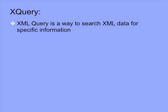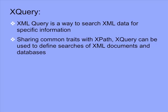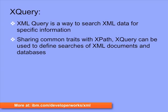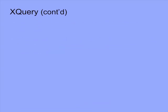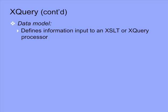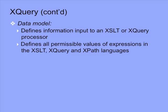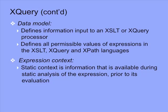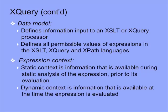XML query, or XQuery, is a powerful way to search XML data for specific information. Sharing common traits with XPath, such as traditional XPath expressions, XQuery can be used to define searches of XML documents and databases. XQuery is defined in terms of the data model and the expression context. The data model defines information input into an XSLT or XQuery processor, and also defines all permissible values of expressions in the XSLT, XQuery, and XPath languages. In the expression context, static context is information available during static analysis of the expression, prior to its evaluation. Dynamic context is information that is available at the time the expression is evaluated.